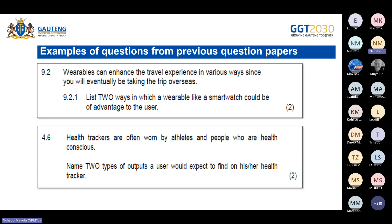Question 4.6 uses the action verb 'name': health trackers are often worn by athletes and health-conscious people. Name two types of outputs a user would expect on a health tracker. You would mention a step counter, exercise frequency, sleep duration, heart rate, and so forth. Although the two questions look different, the examiner is looking for very similar information.